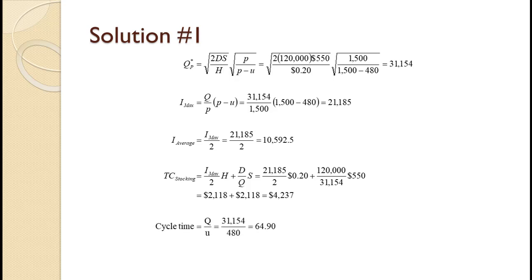The order quantity of 31,154 divided by the usage rate of 480 gives us a cycle time of 64.90. What that means is that each order will last production almost 65 working days. Finally, the order quantity of 31,154 divided by the daily production rate of 1500 gives us a run time of 20.77. What that means is that it takes almost 21 working days to produce each order.